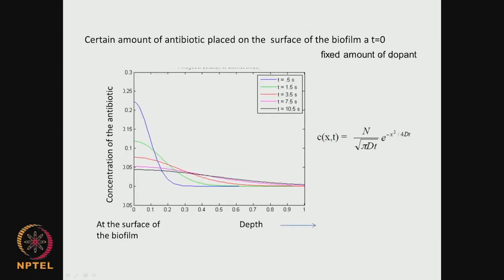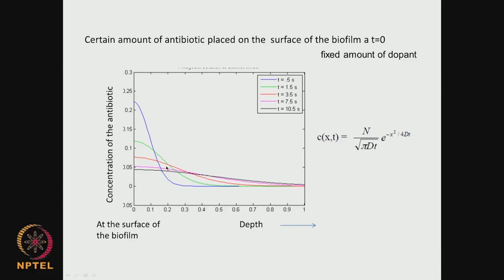If you have a fixed amount of antibiotic placed on the surface, initially at very short time you may have very high concentration at the surface, but as you move inside the biofilm the concentration drops drastically, and over time this surface concentration also falls. In both cases, as you move inside from the surface the concentration of nutrient, antibiotic, or oxygen falls drastically due to diffusion. Hence bacteria inside face different environments, leading to changes in growth pattern, gene expression, and antibiotic resistance.